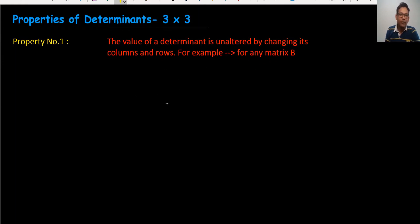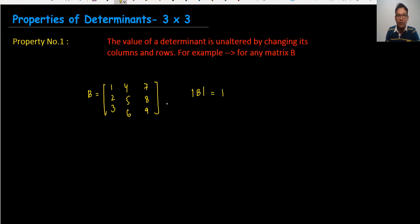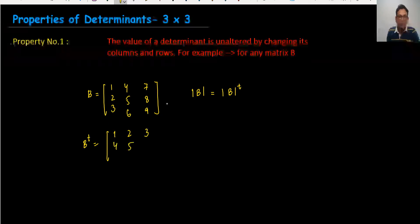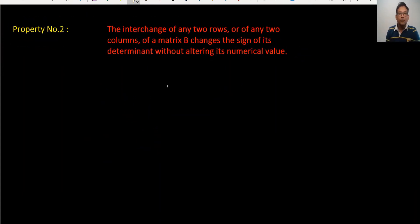The first property: the value of the determinant is unaltered by changing its rows to columns. For example, if matrix B is [1 2 3 / 4 5 6 / 7 8 9], then the determinant of B equals the determinant of B-transpose. The transpose means all the rows become columns, and the determinant will always be the same.